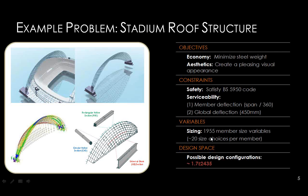This structure had roughly 2,000 members, and with architectural requirements, there are about 20 different commonly fabricated sections that the engineer could choose from. If you look at this as a math problem and enumerate all possible configurations, you get an enormously large number. We're dealing with very large problems in terms of the space of possible designs, and the question is how engineers come up with the most efficient designs given such a large problem space.